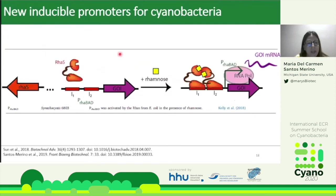The last new promoter is a rhamnose-inducible promoter. In the absence of rhamnose, the activator RhaS cannot dimerize and bind to the promoter regions. When rhamnose is present, this activator dimerizes, binds to the promoter, and allows RNA polymerase to bind and transcribe the gene of interest.